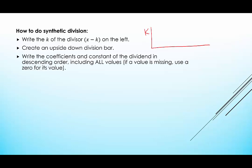Write the coefficients and constant of the dividend in descending order, and we include all values. If there's a term missing, if we have a degree three polynomial but there's no degree two term, then we would put a zero as the placeholder there. So we would take these coefficients and line them up on the same line as k.